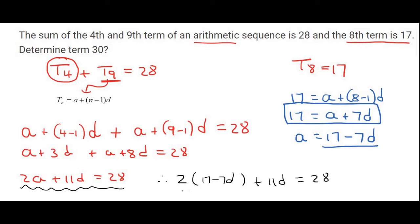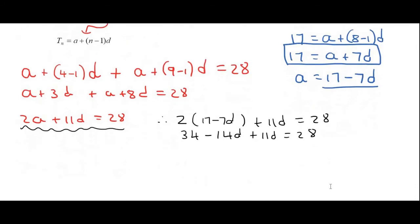We then multiply the 2 in and that will be 34 minus 14D plus 11D equals 28. We can then simplify a little bit and that's going to be 34 minus 3D equals 28.